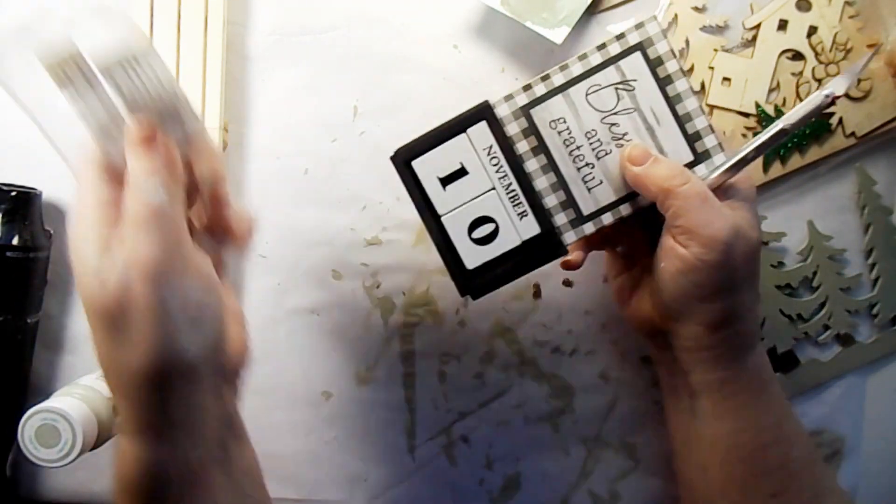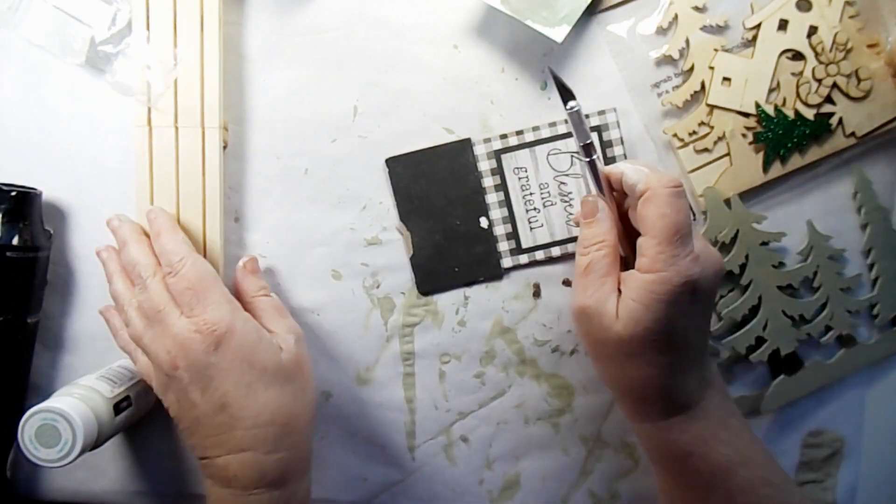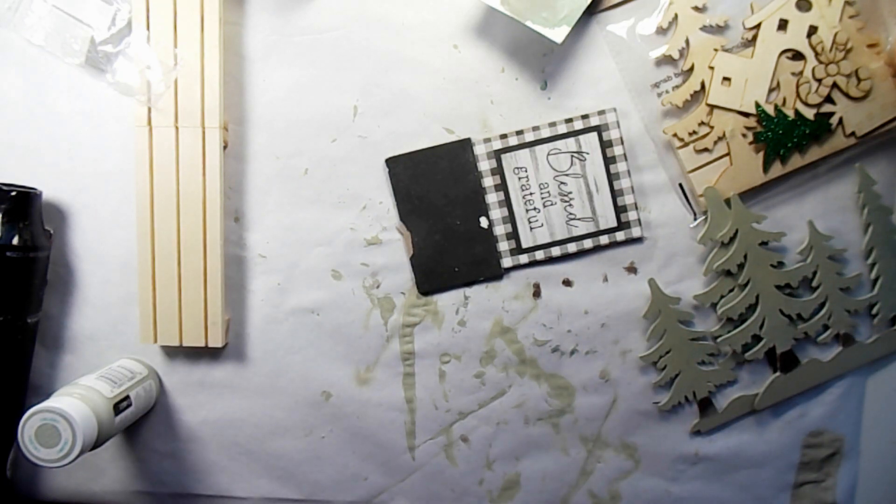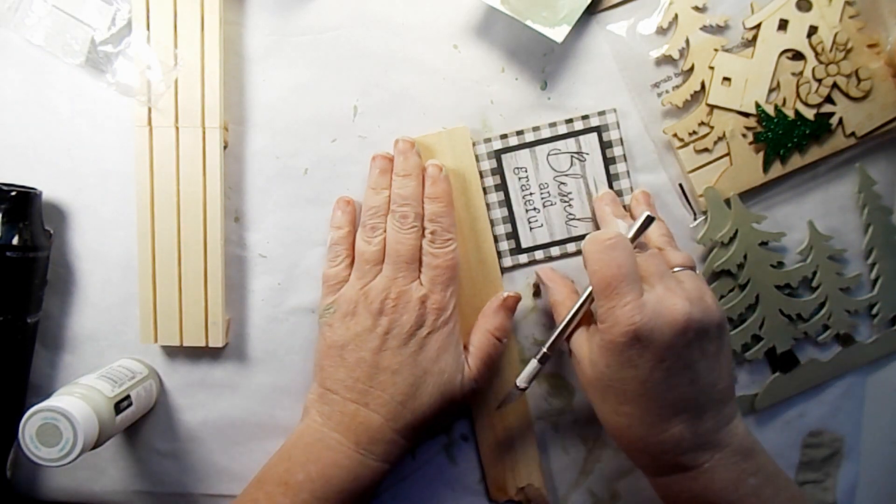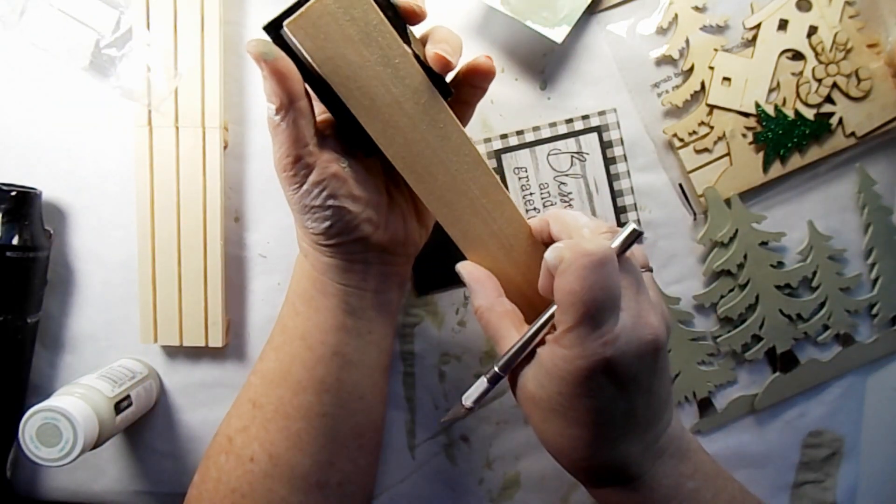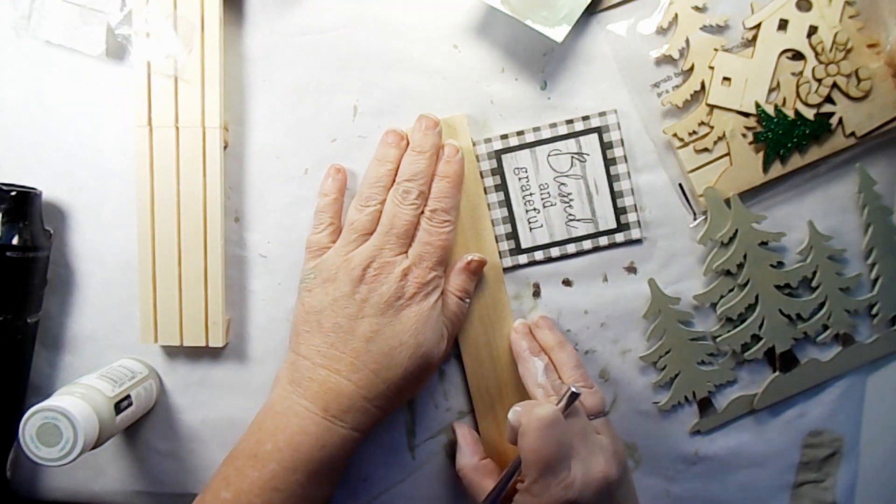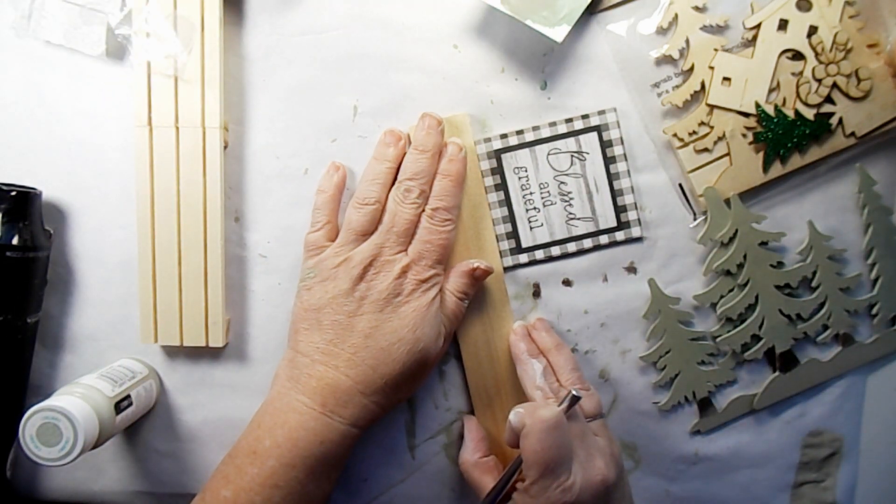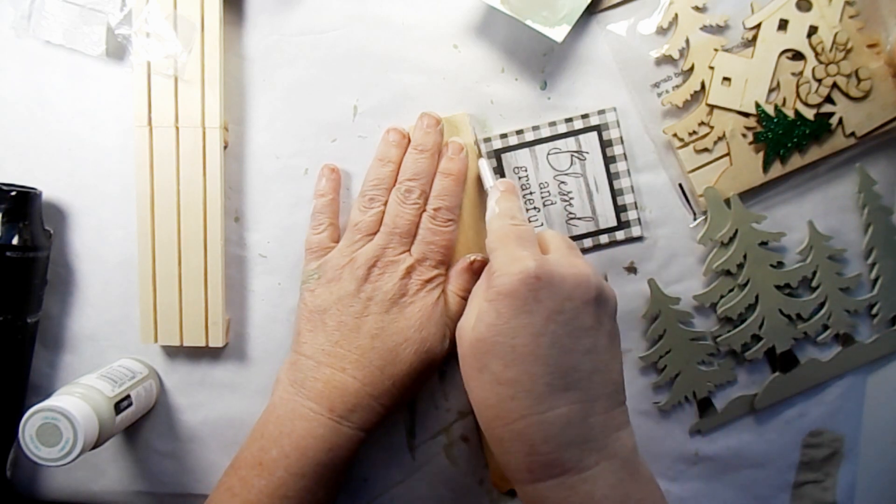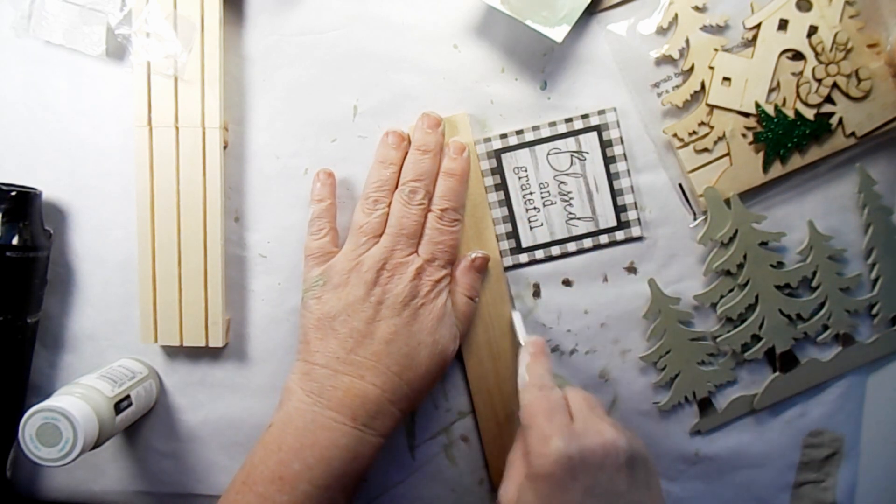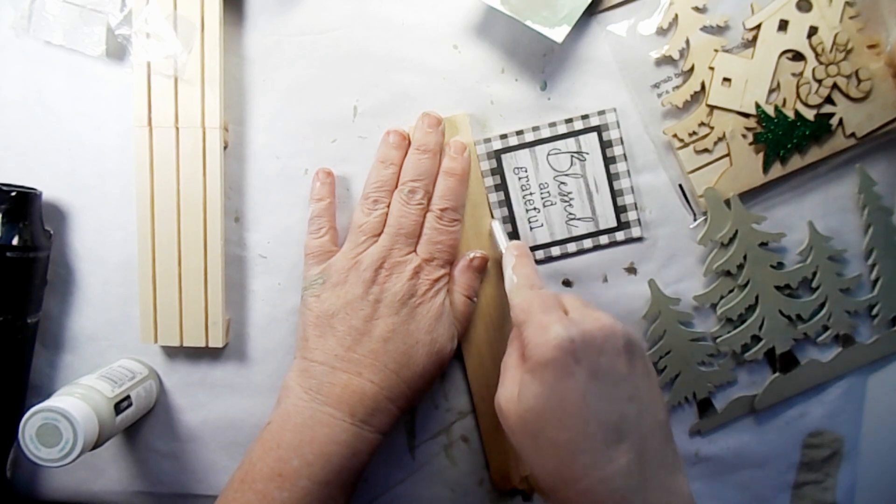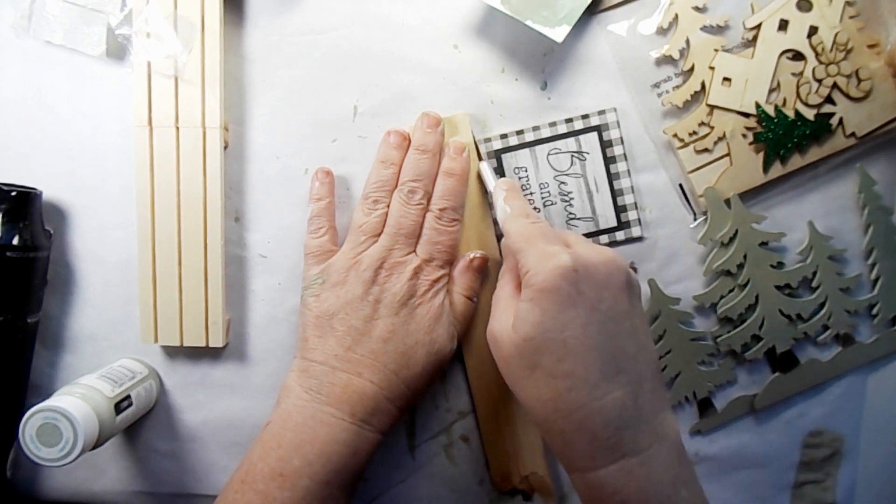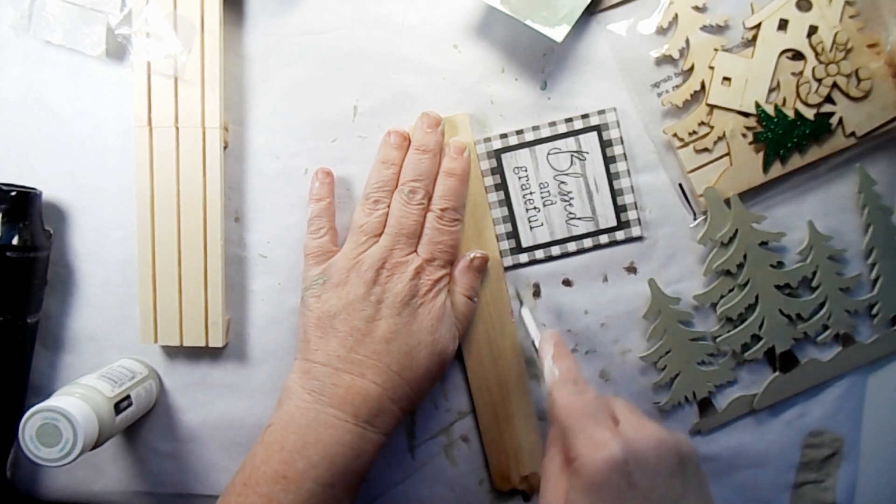Now, I took this little rotating calendar set that you can get from the Dollar Tree, and that was already detached. I end up later using a tag to just go across the back to cover that opening. But you could definitely use a craft knife and just cut the top of this off.